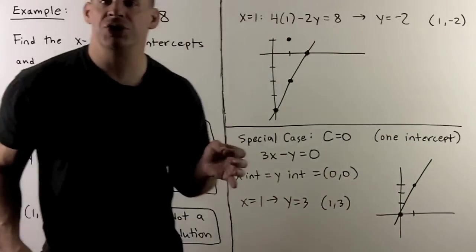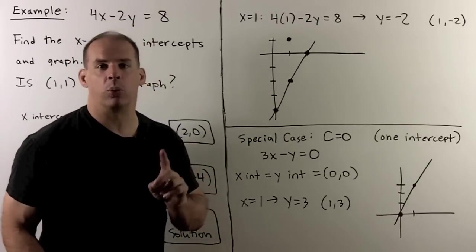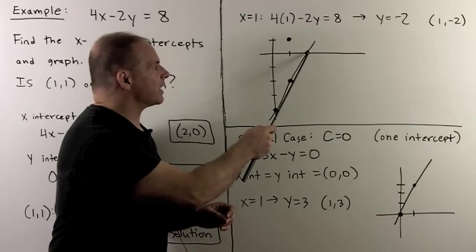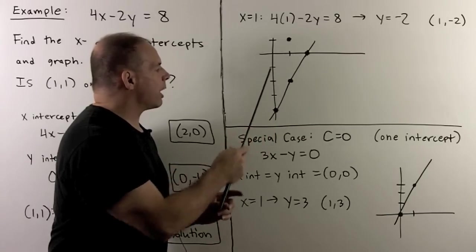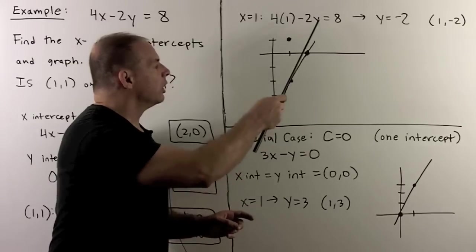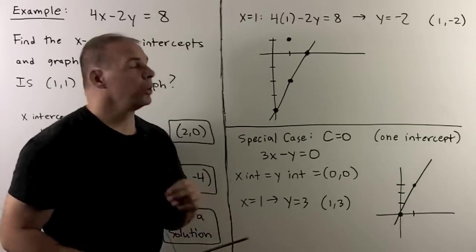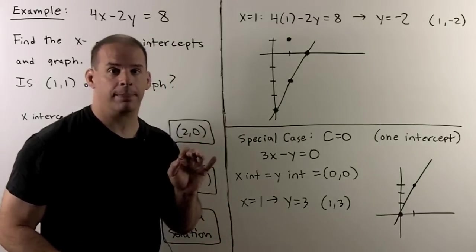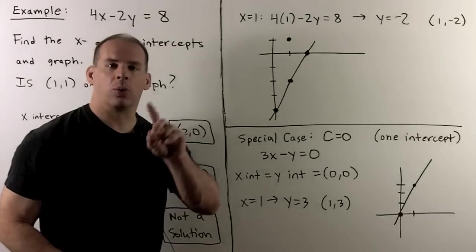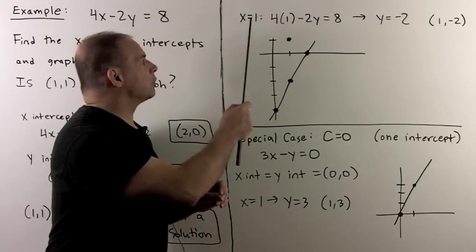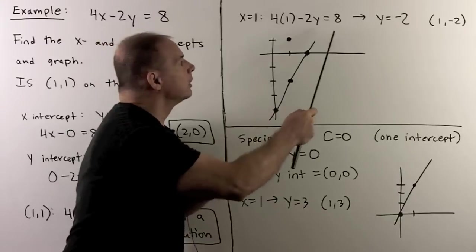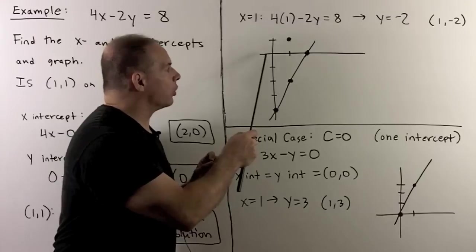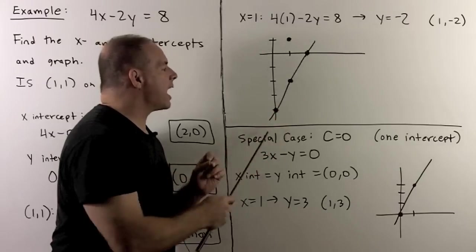To get the graph, we plot the two intercepts (2, 0) and (0, -4) and connect the dots. Point (1, 1) falls off the line, confirming it's not a solution. As a check, let x equal 1: solving gives y equal to -2, so the point (1, -2) lies on the line, which confirms our work.